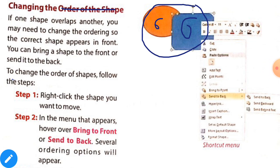To change the order of the shapes, follow the steps. First one is right click the shape you want to move. As you want to move the green one, then you will have to right click on that.